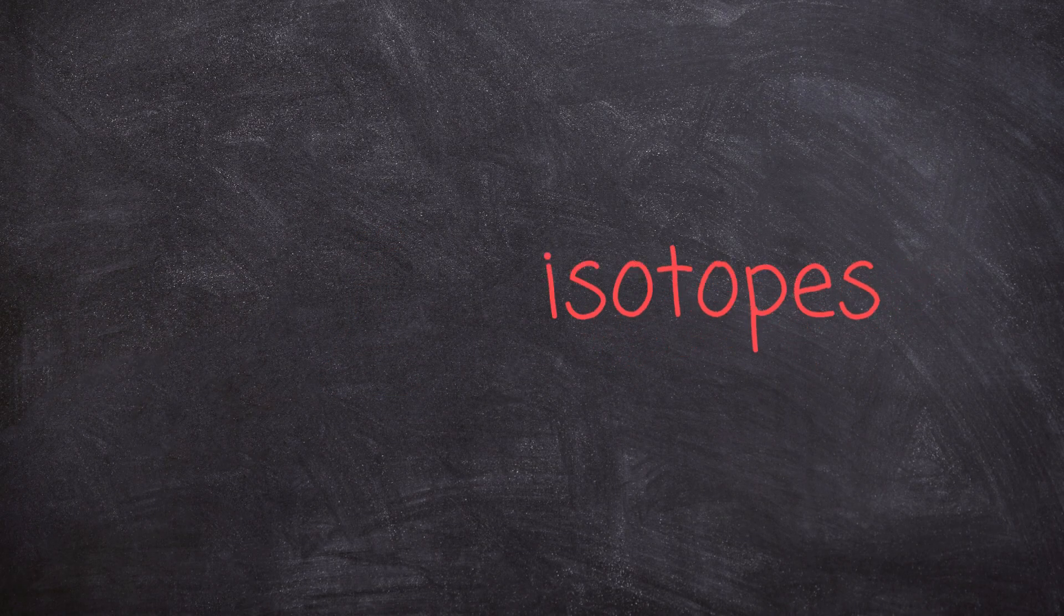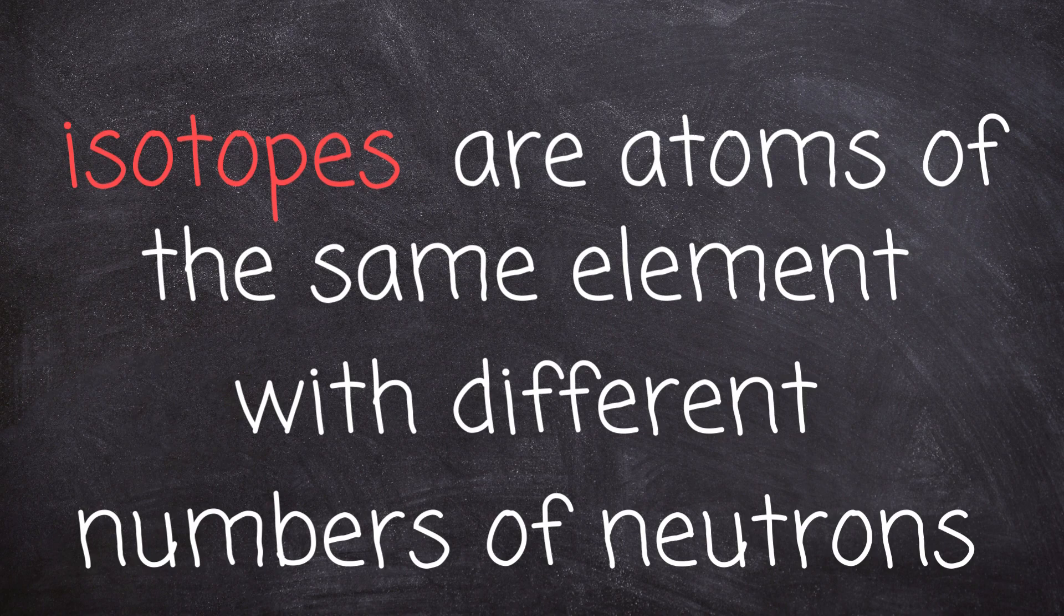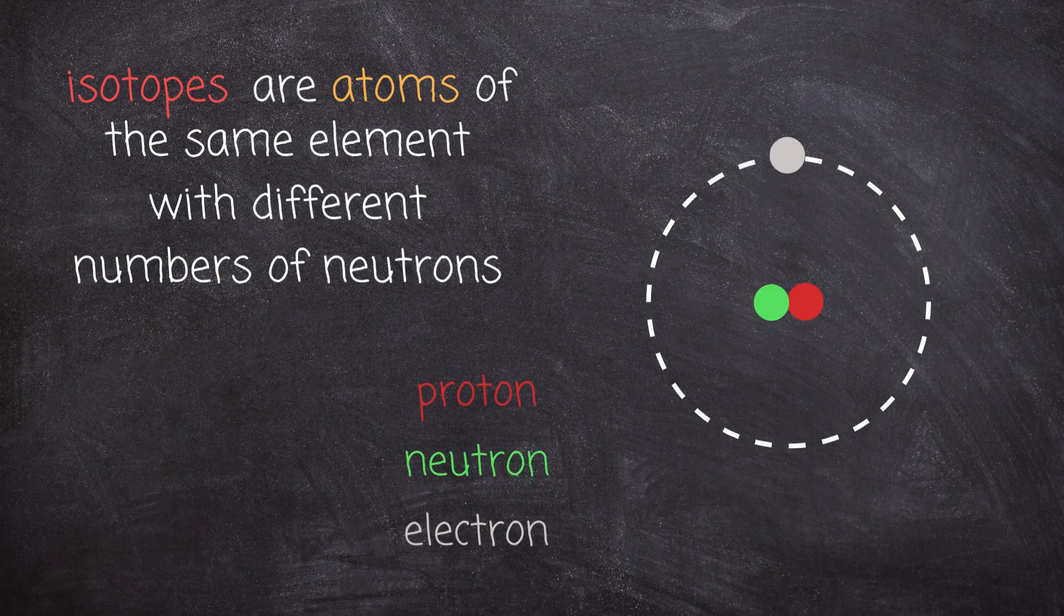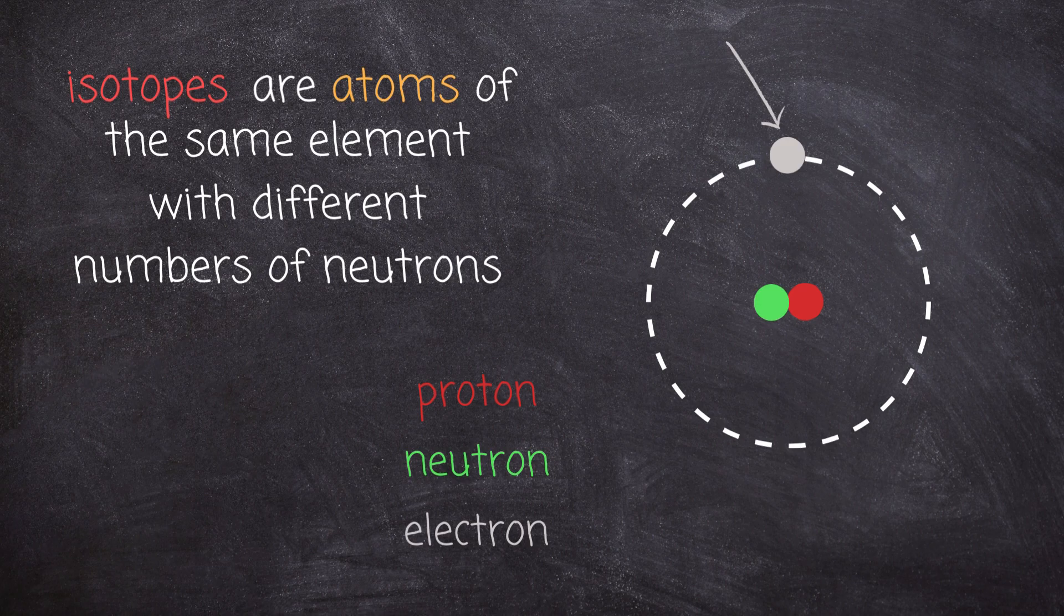What are isotopes? Isotopes are atoms of the same element with different numbers of neutrons. Atoms are composed of a nucleus of protons and neutrons, while electrons orbit around the nucleus in distinct energy levels. Protons dictate the element's identity.